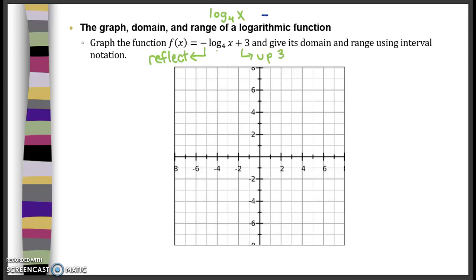Log base 4 of x is going to have a point at 1, 0. And then it's going to have a point at b, 1, where b is 4. b is our base. So we're going to have a point at 4, 1.